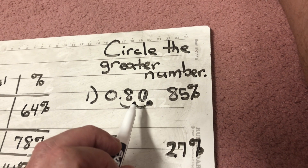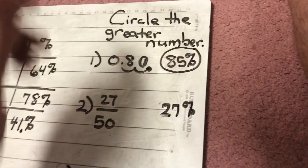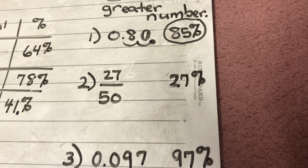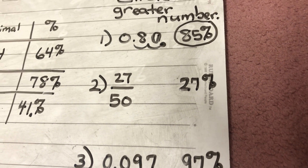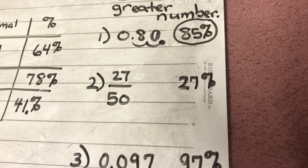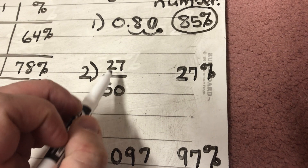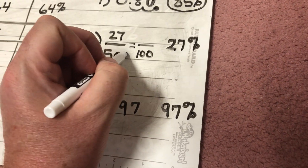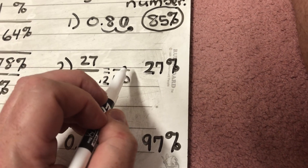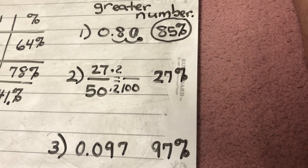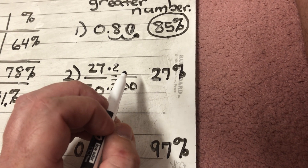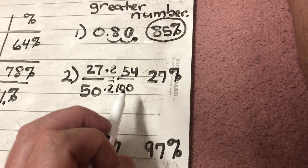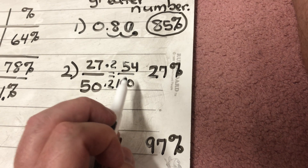85 percent is bigger than 80 percent, so I circle 85 percent. For number two: 27 over 50 or 27 percent — which is greater? Percent means per 100, so I can make a fraction over 100. I know 50 times 2 equals 100, so I multiply the numerator by 2 as well: 27 times 2 is 54, giving me 54 over 100.